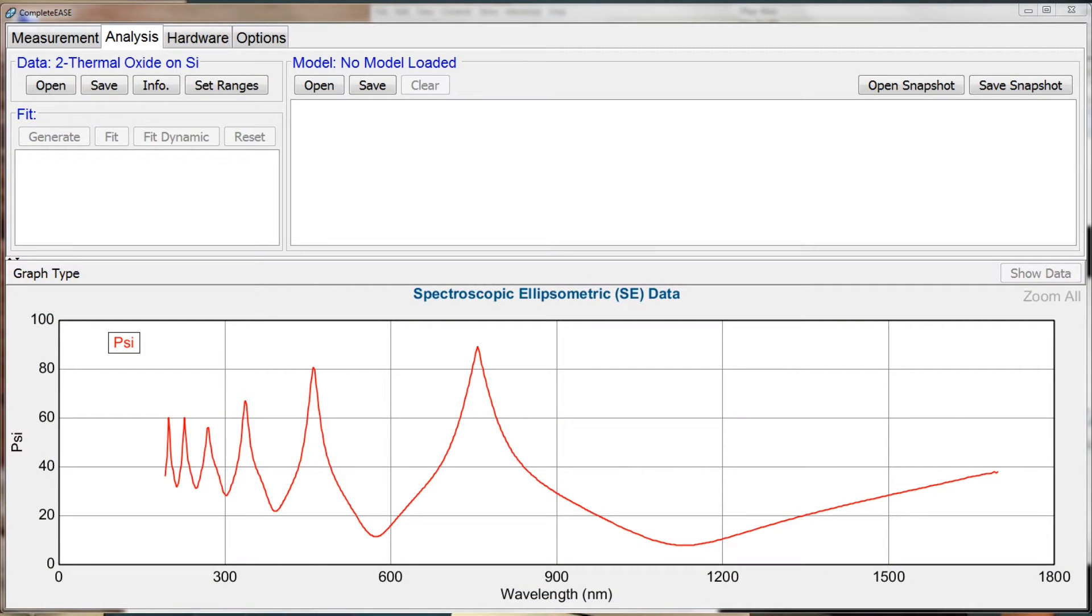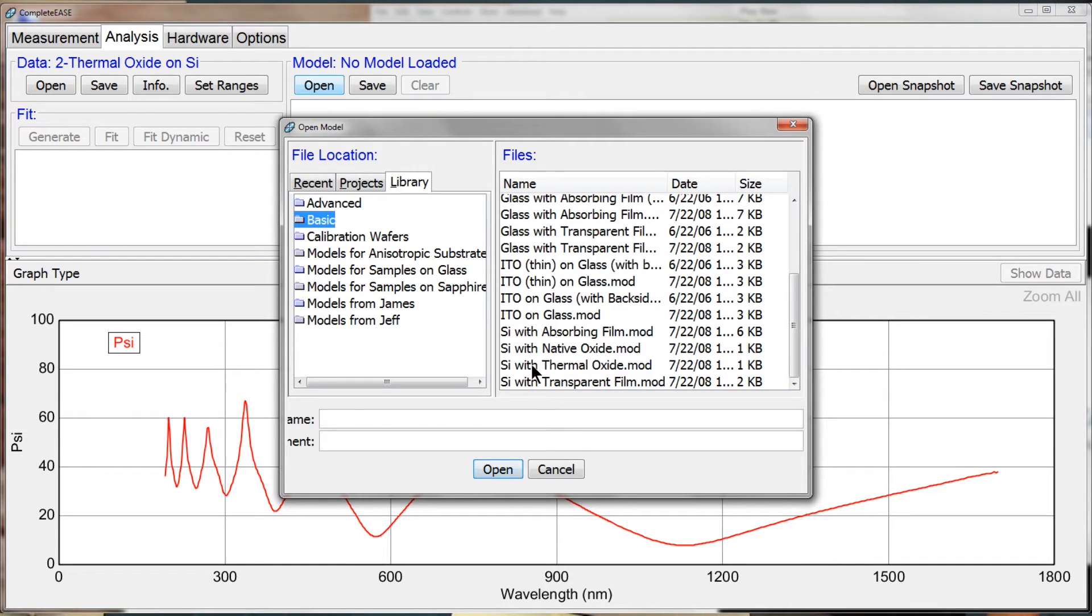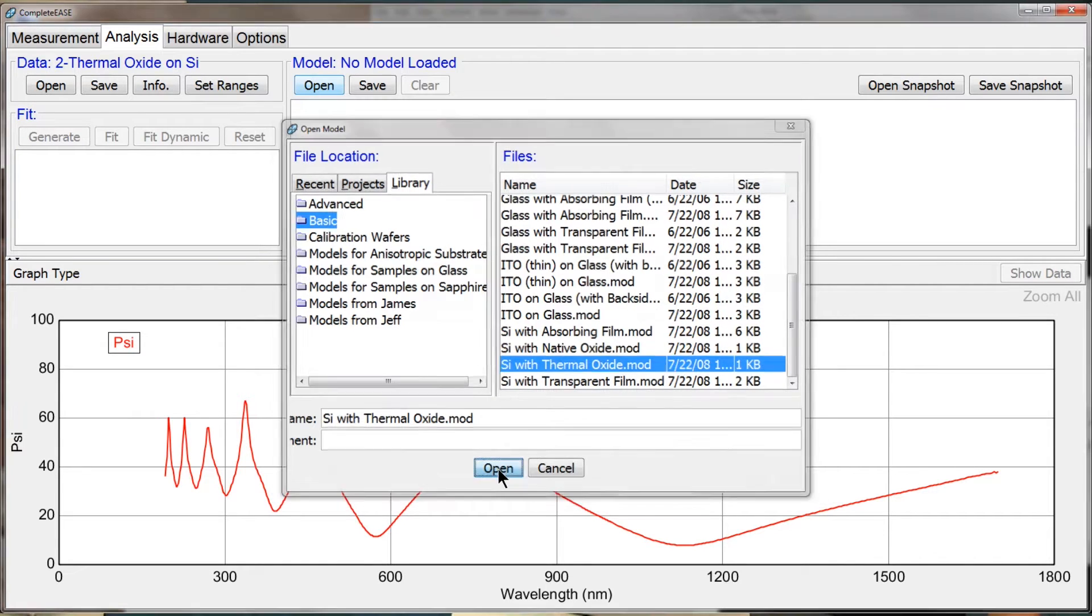Let's jump over to that data in CompleteEase. This was a measurement on another thermal oxide on silicon, so I'm going to open the same model we used in the previous section, which is the silicon with thermal oxide model.